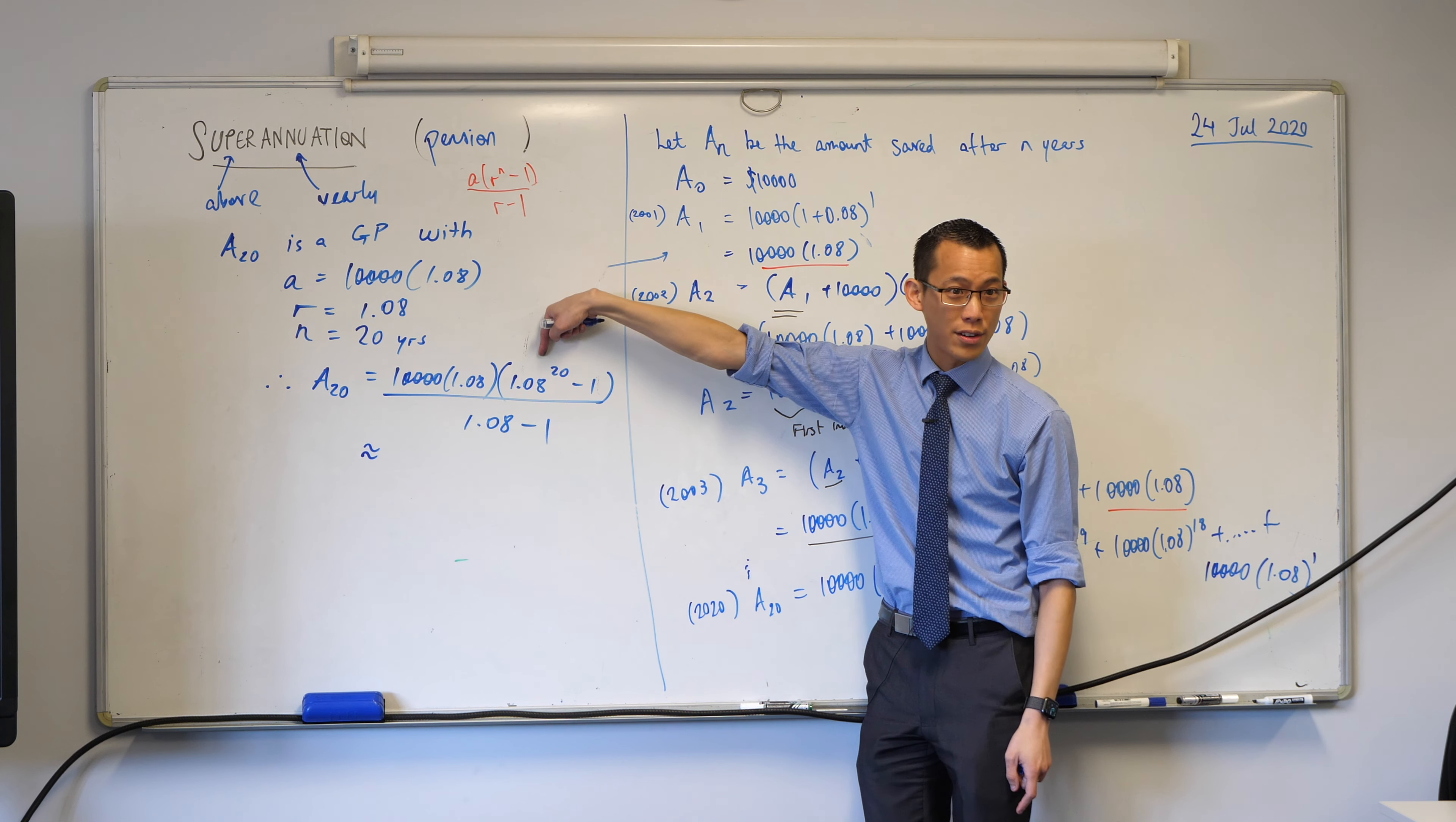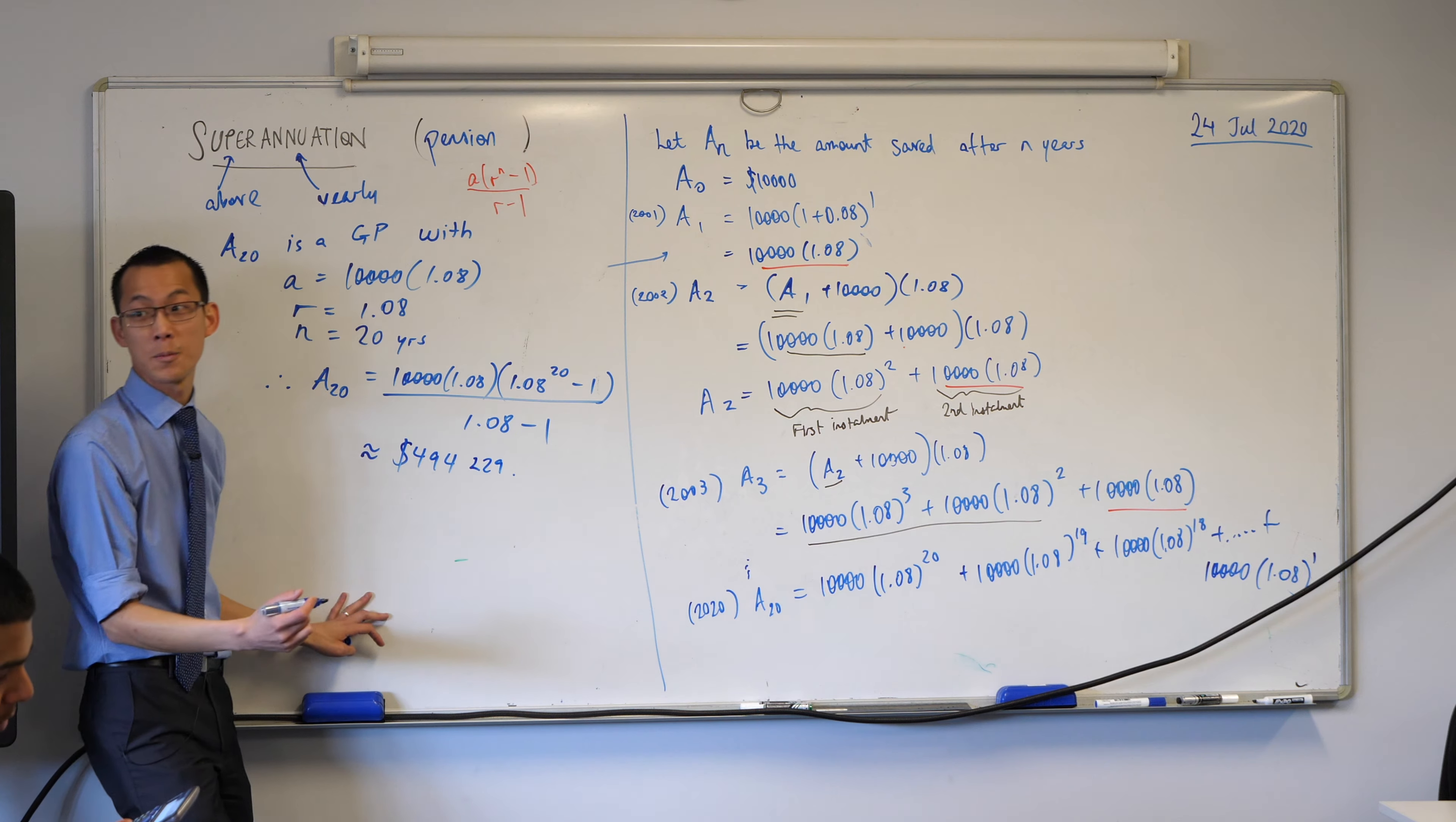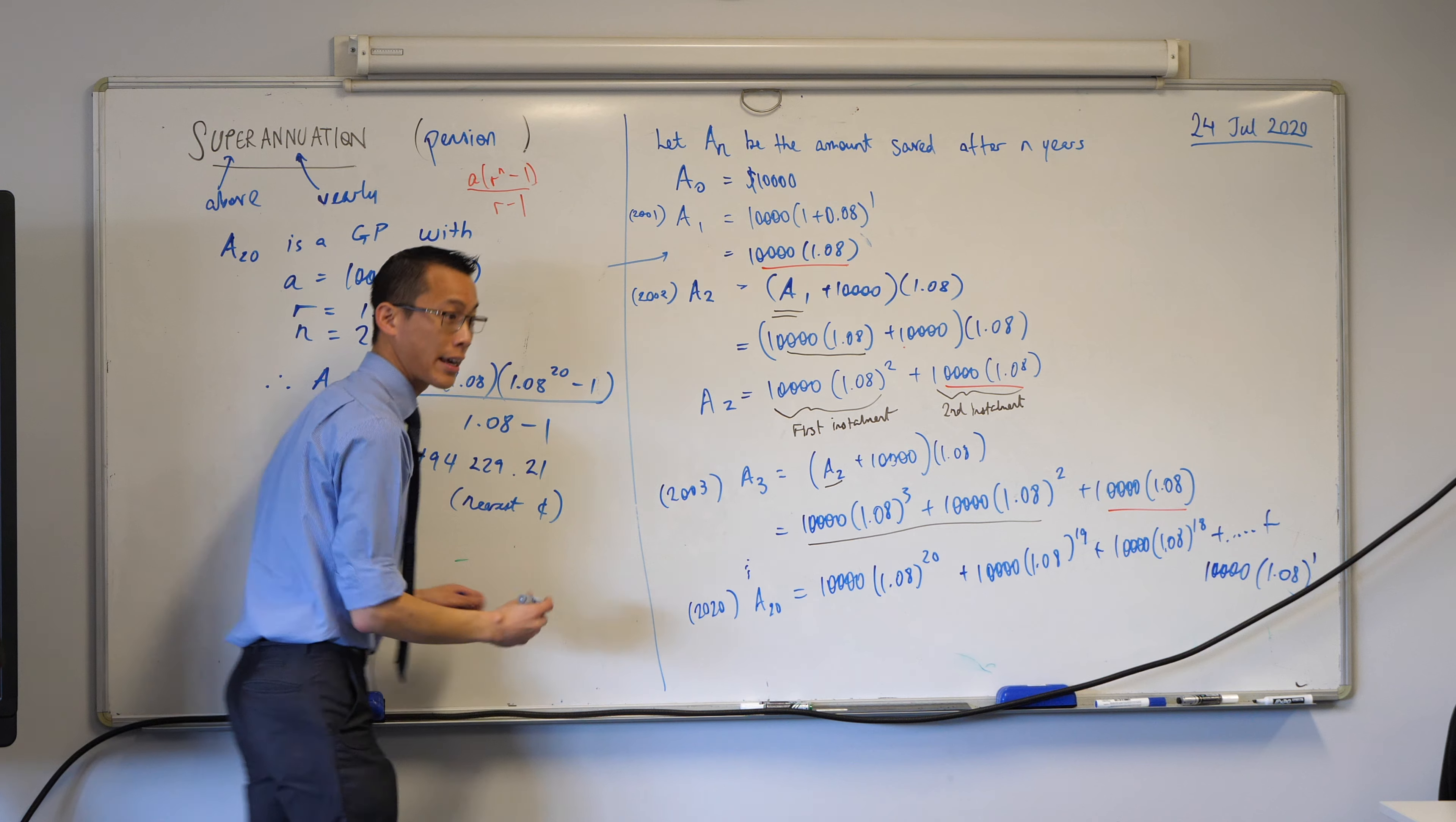So this is going to have weird trailing decimals on it. Okay, I feel like enough of you should get there. It starts with a 4. What is it? 494,229. Thanks, right? 229. And give me a number of cents. 21 cents. And because we're rounding, you've got to say that you're doing that, so I'll say to the nearest cent.